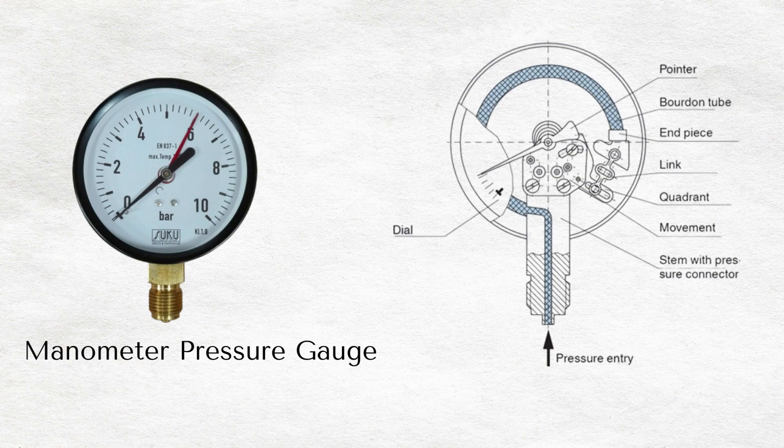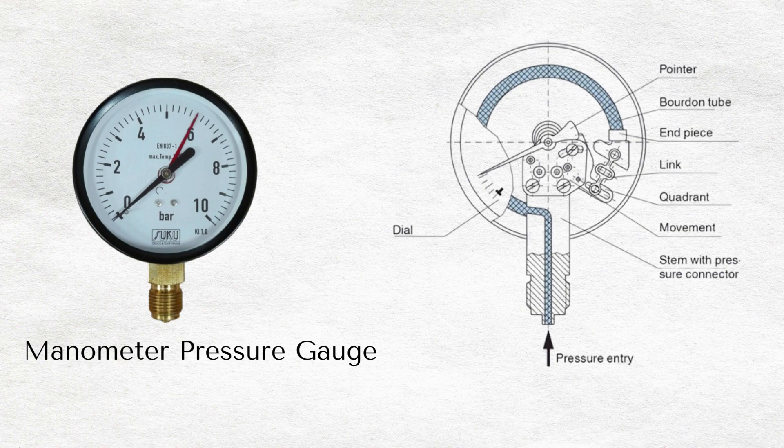Manometer pressure gauge. Manometer pressure gauges measure pressure on a fluid by balancing one column of fluid against the second column of fluid. This type of pressure gauge is the simplest and consists of a transparent tube in the form of a U that is partially filled with a manometric fluid like mercury.